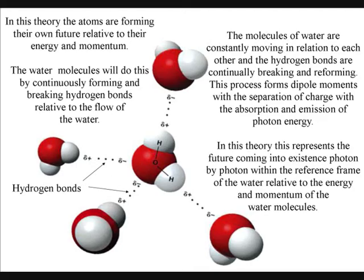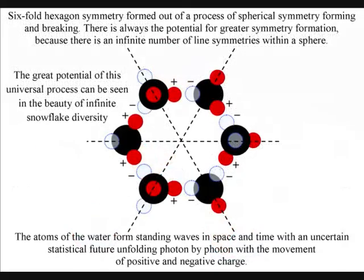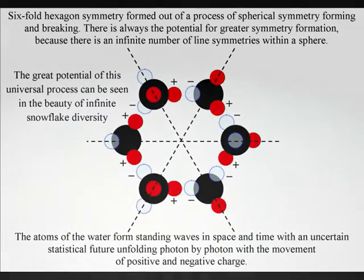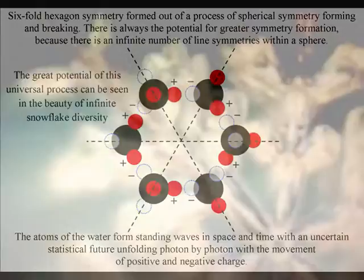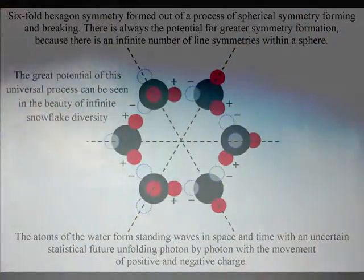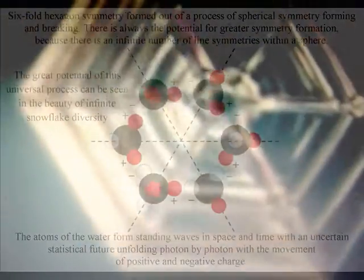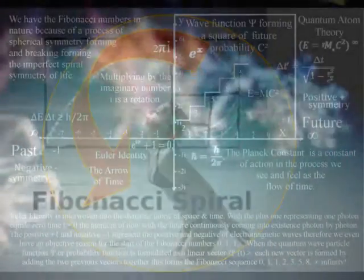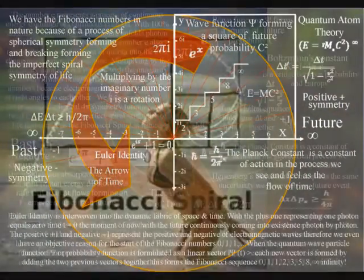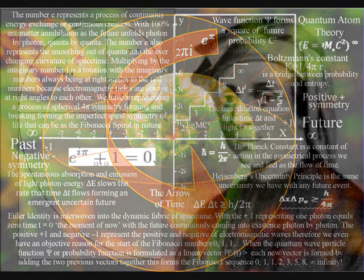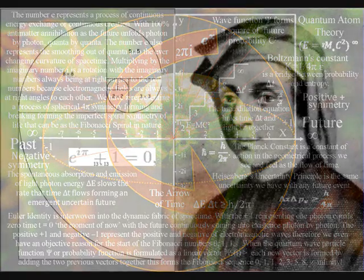Just a change in environmental temperature can lead to the atoms bonding together forming complexity. This can be seen here in infinite snowflake diversity. We can think of this as a process of symmetry forming and breaking, and when the symmetry is broken, it has the potential to form the most beautiful of geometrical shapes, with the Fibonacci spiral being visible almost everywhere in nature.